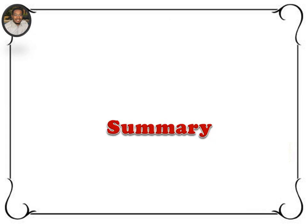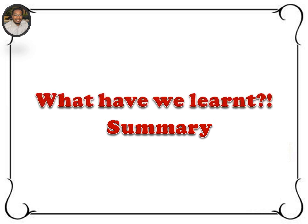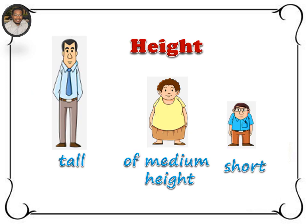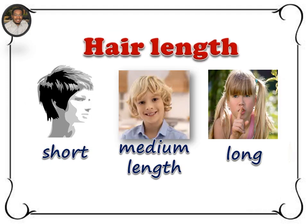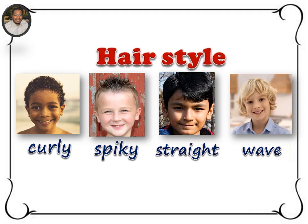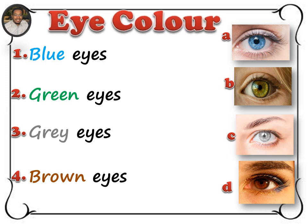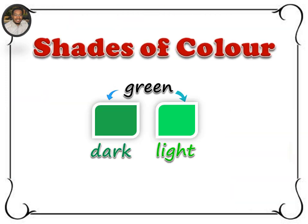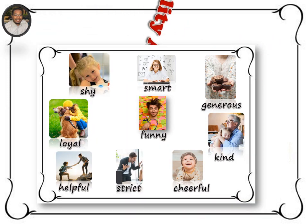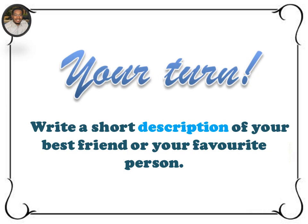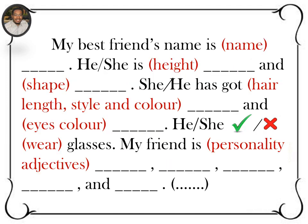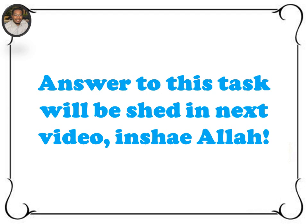These are personality adjectives. We've reached the end of our lesson. What have we learned today? We've learned: height, shape, hair length, hairstyle, eye color, shades of color, and personality adjectives. Now your turn — I want you to write a short description of your best friend or your favorite person. You can use the guide to help you. Answers to this task will be shared in the next video.